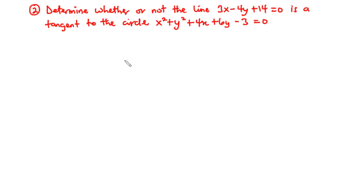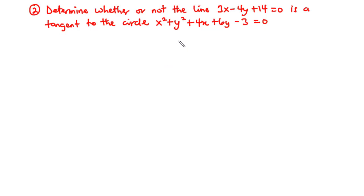We now solve: Determine whether the line 3x − 4y + 14 = 0 is a tangent to the circle x² + y² + 4x + 6y − 3 = 0. We will find the radius of the circle, then check whether the perpendicular distance from the line to the center equals the radius.